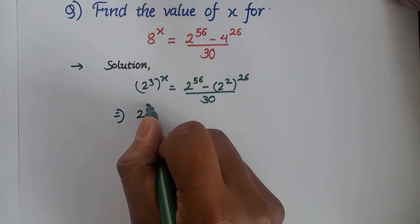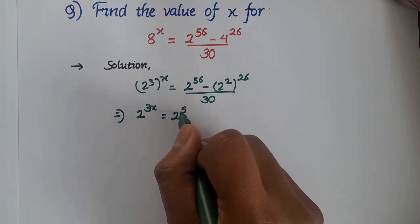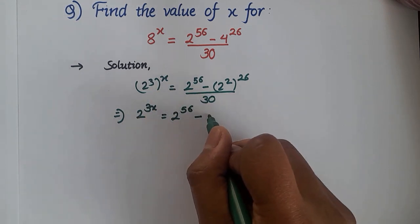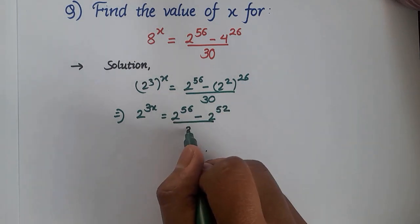This will give us 2^(3x), the powers are multiplied, is equal to 2^56 minus 2 power. If we multiply the powers then we'll get 2^52 over 30.